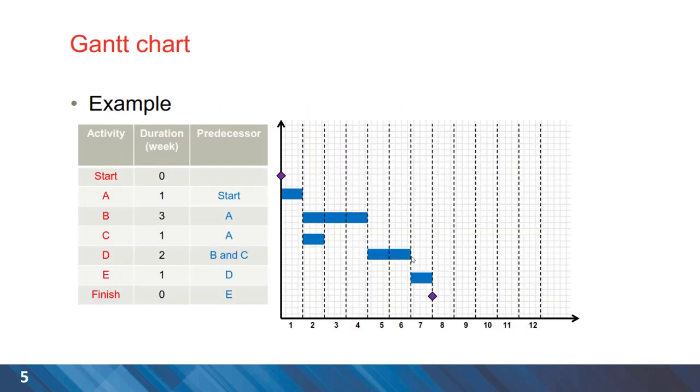Here is an example, a simple project with five activities and two milestones. The start and finish milestones are shown by a diamond sign and then we have activity A as the first activity with duration of one week.